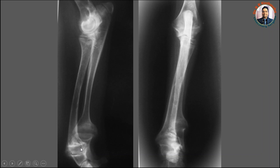Cupping is very clear in the anterior-posterior view. In the anterior-posterior view, you could see here — this is the mushrooming or cupping of the distal metaphysis of the radius, whereas this one is the cupping or mushrooming of the distal metaphysis of the ulna. You could also see there is an increase in the thickness of the physis, and there is also a decrease in the thickness of the cortex.